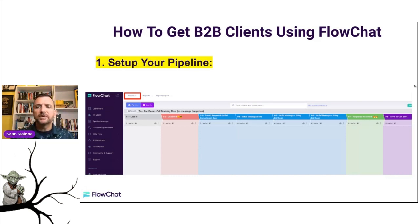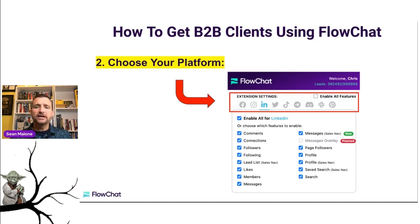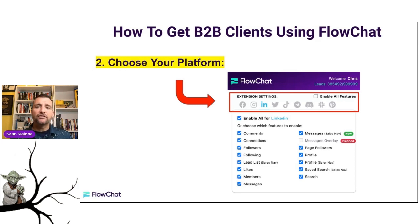Once we've set up our pipeline, the next step is very simple: we just choose your platform. What platform are you going to go and find these clients from? You can go to Facebook, Instagram, LinkedIn, Twitter, TikTok, Telegram, Discord, Slack, or Pinterest. We're the only ones on earth that have nine platforms available and we're compliant with everything on all of them.